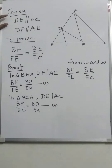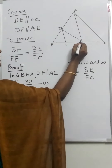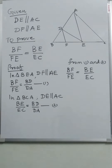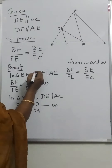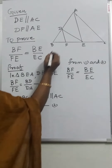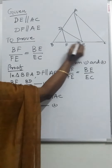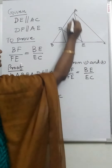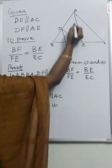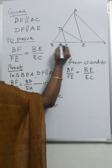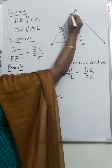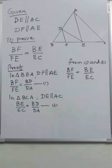First step: in triangle BEA, we take DF parallel to AE. DF is parallel to AE. This is the triangle BEA. Therefore, BF by FE is equal to BD by DA by the Basic Proportionality Theorem.